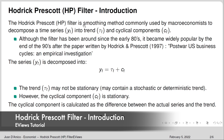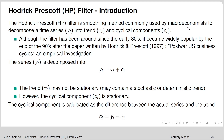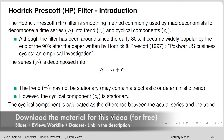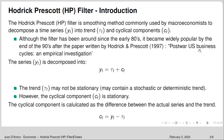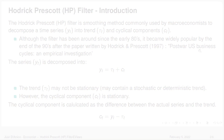The HP filter is a smoothing method commonly used by macroeconomists to decompose a time series into trend and cyclical components. Although this filter has been around since the early 80s, it became widely popular by the end of the 90s after the paper written by Hodrick and Prescott in 1997, entitled 'Postwar US Business Cycles: An Empirical Investigation'.